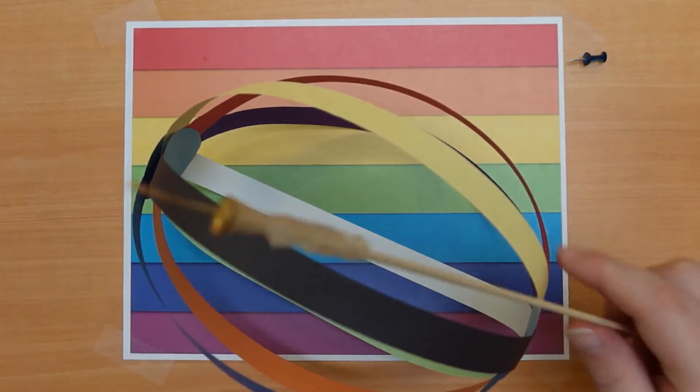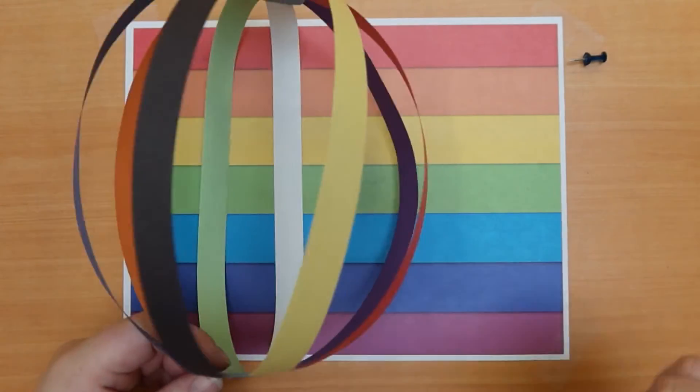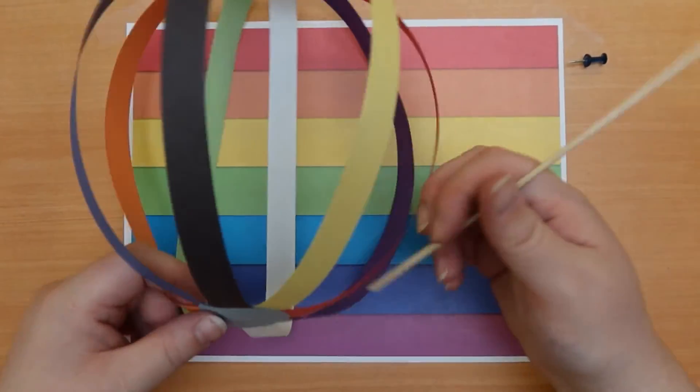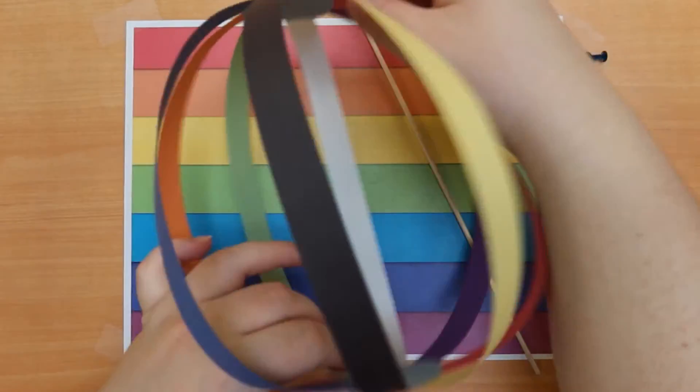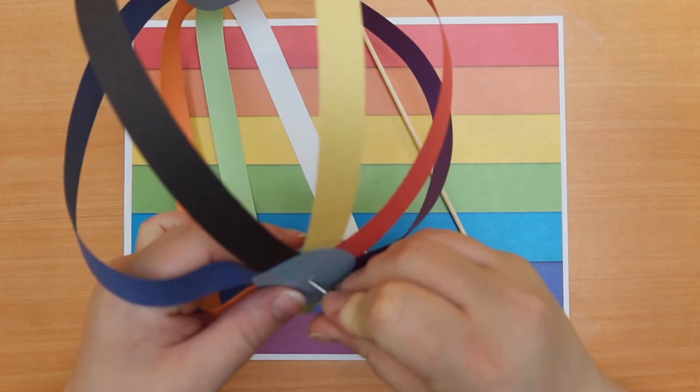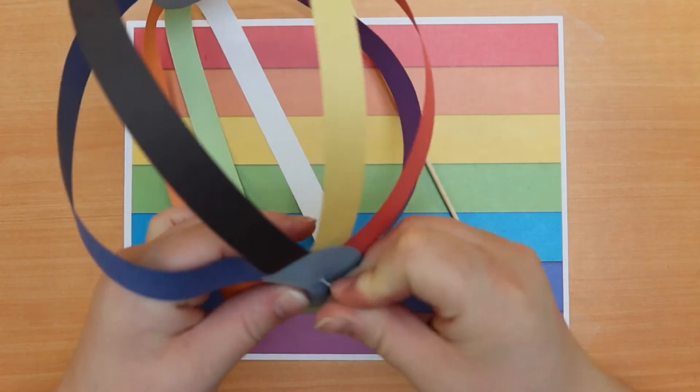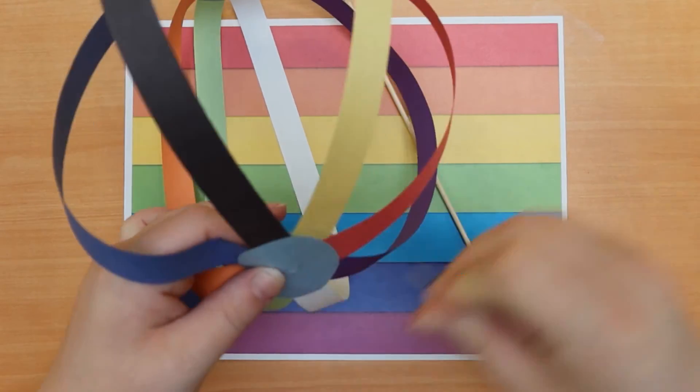Now you will take your wooden dowel and poke it to the center of both circles of paper. If the hole in the bottom is not big enough you can just make it a little bigger.